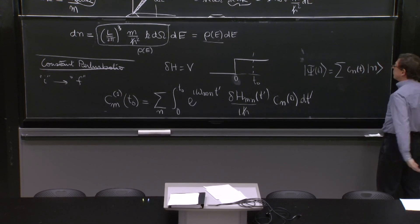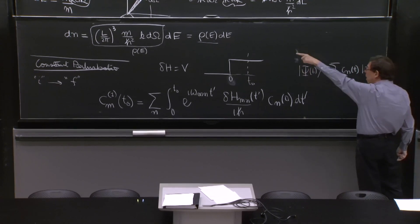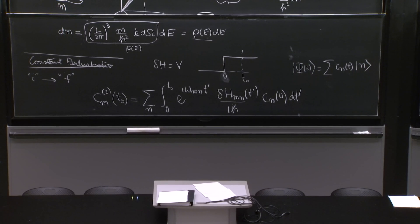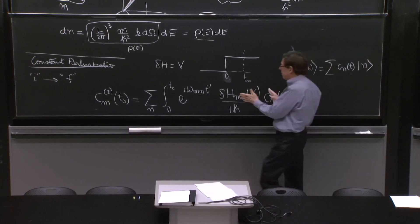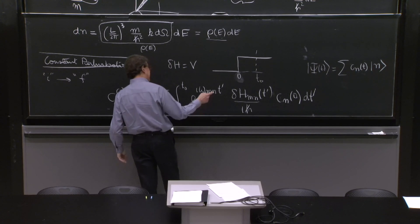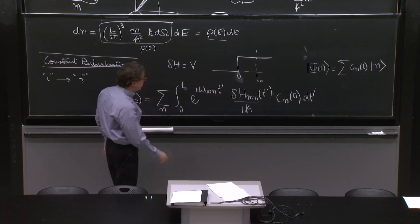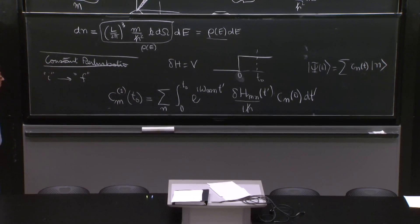Well, to first order in perturbation theory, the c n's are called c n's 1's. And they're given by this formula. First order in perturbation theory, because we have a single delta H. This omega m n is the energy of m minus the energy of n over h bar. And that's it. Those are all our symbols.